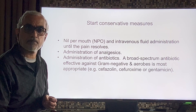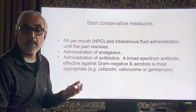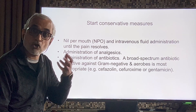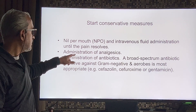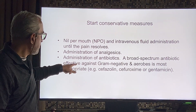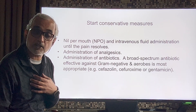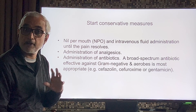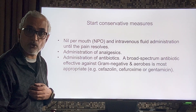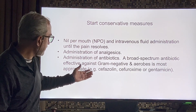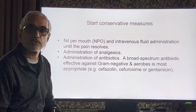Conservative treatment must be started. Since this is a GIT condition with nausea and vomiting — and eating will cause the gallbladder to contract — the patient should be kept nil per mouth with intravenous fluid administration until the pain resolves. Administer analgesics to make the patient comfortable; they do not alter signs. Give antibiotics covering gram-negative organisms and anaerobes, such as second- or third-generation cephalosporins like cefazolin or cefuroxime combined with gentamicin.